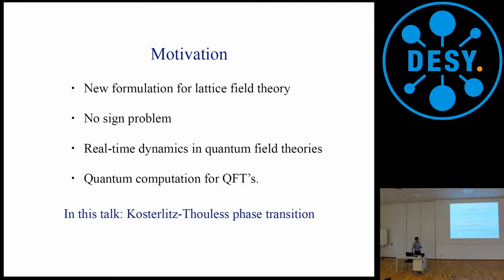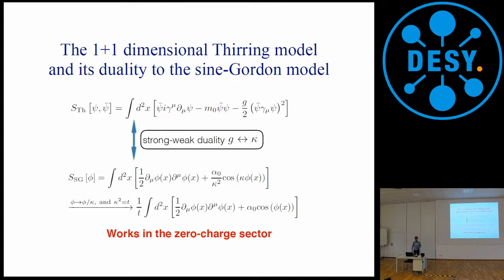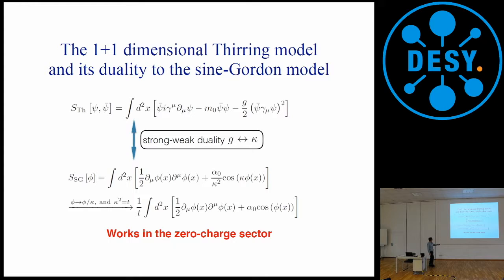In this talk, I will present our work on pinning down the costless-to-less phase transition in the Thirring model. The 1+1 Thirring model is dual to the Sine-Gordon theory, as established by Coleman. This is the Thirring model action with bare mass and bare four-fermion coupling, and it's dual to the Sine-Gordon theory in an S-duality, meaning the coupling constant G is inversely dual to the coupling kappa in the Sine-Gordon theory.